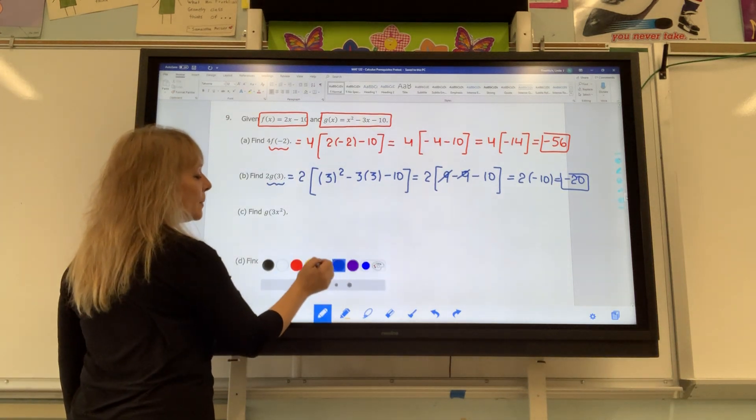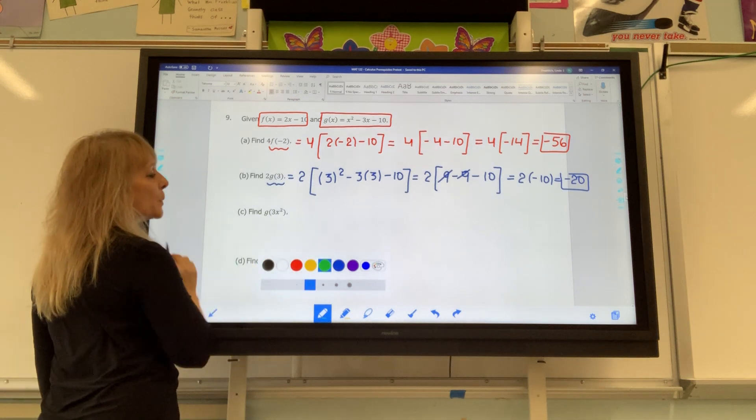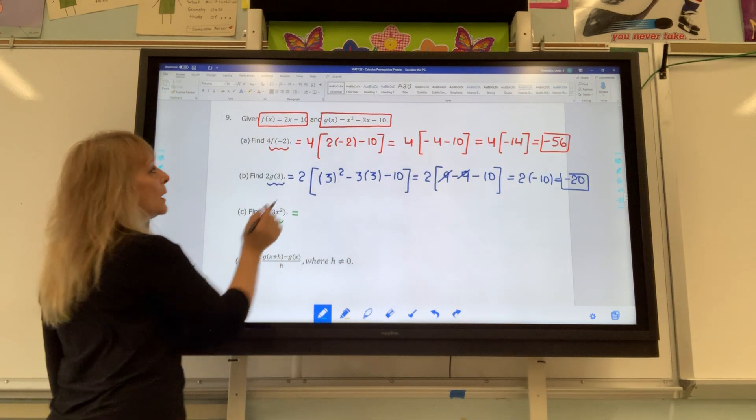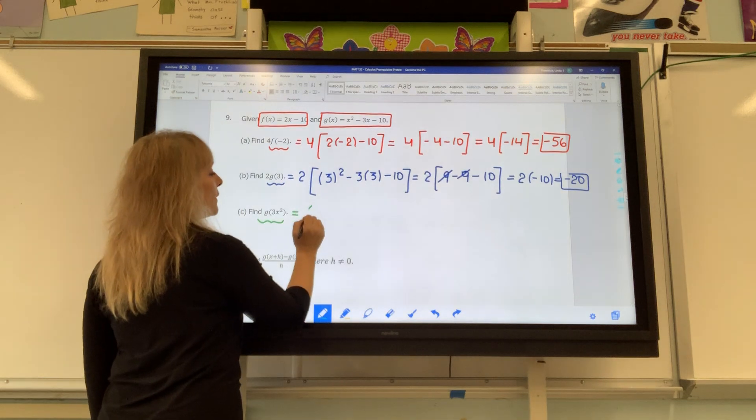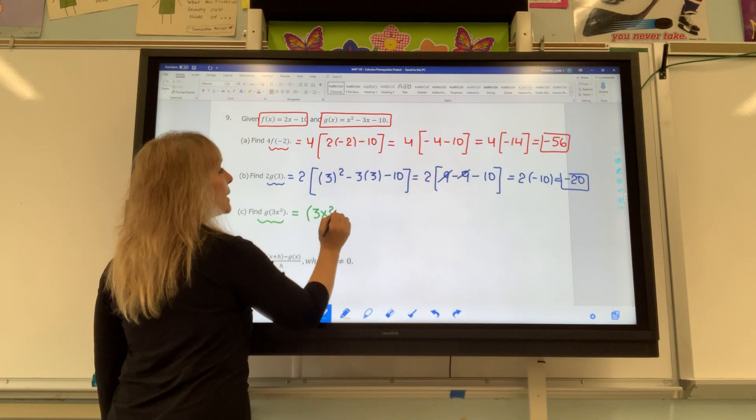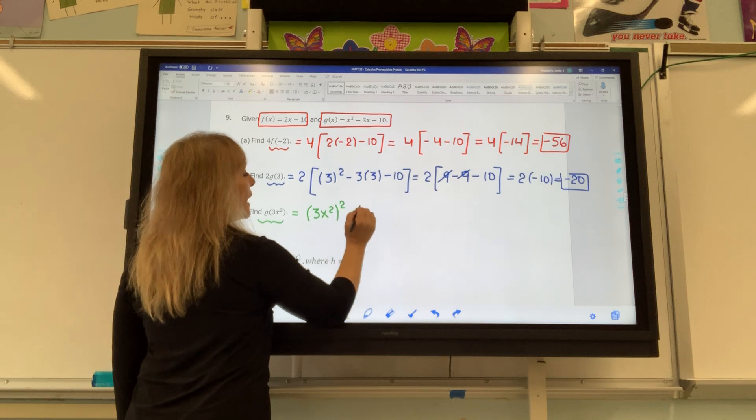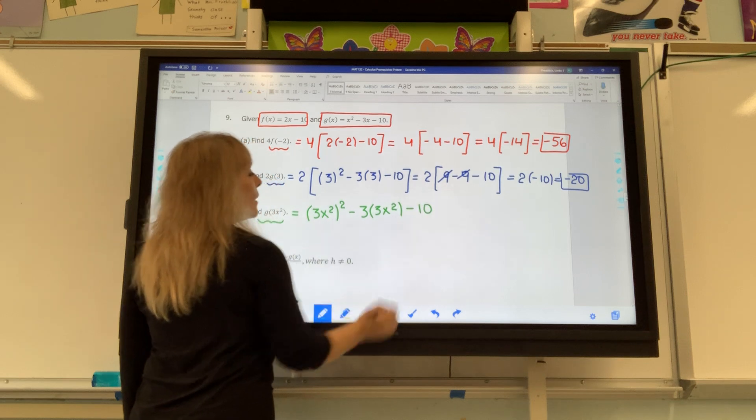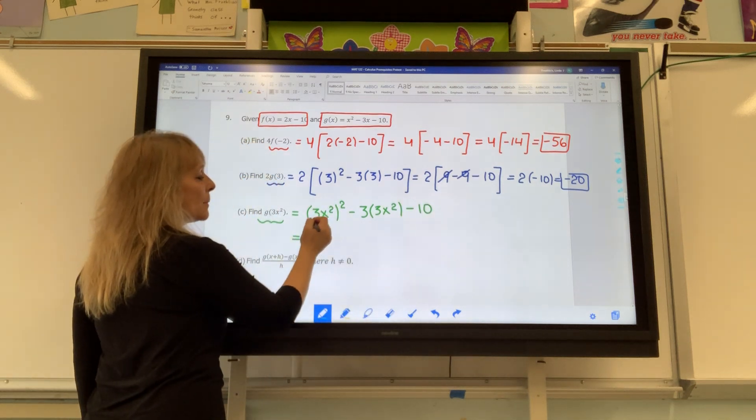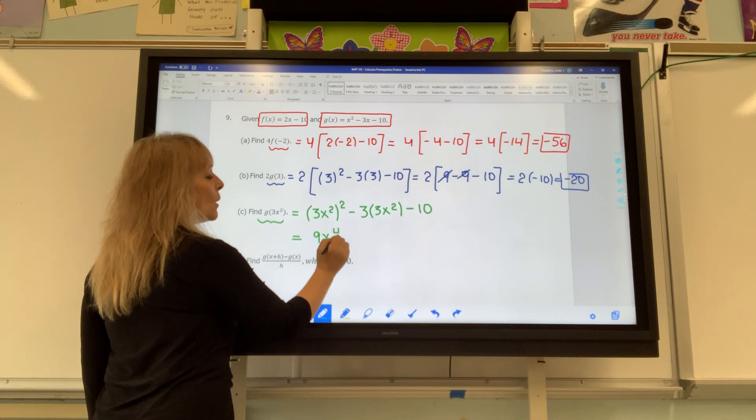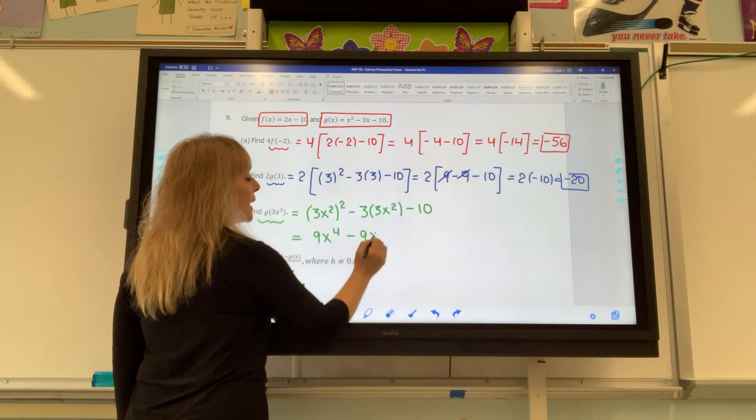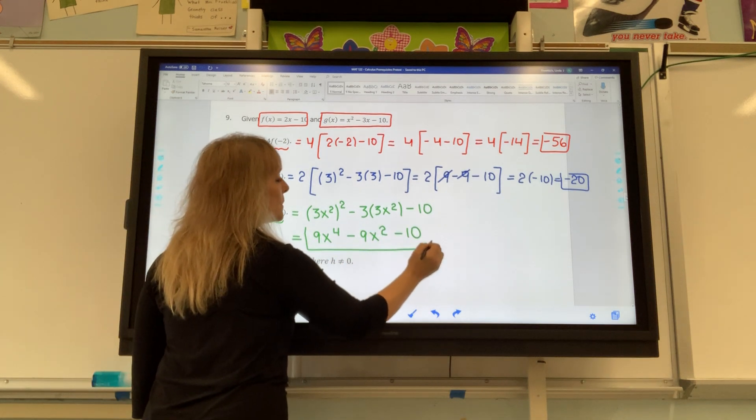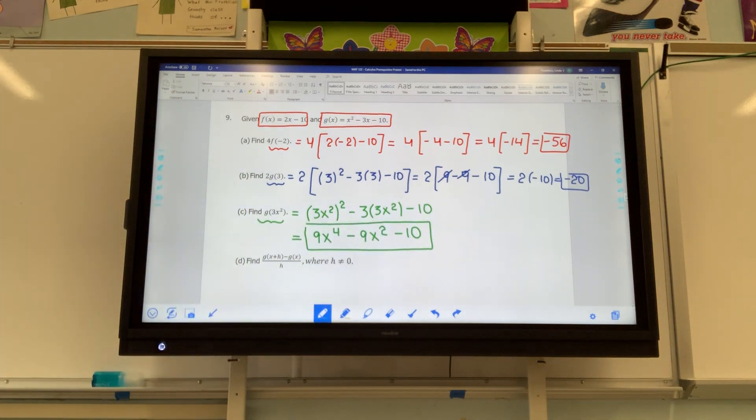Changing the problem a little bit because it's not a value you're putting in, it's an expression. This means fill in 3x squared, that monomial, into all the x's on the right-hand side of g. So 3x squared is going to be substituted in for it. When you square, it becomes 9x to the 4th. When you multiply, it becomes 9x to the 2nd, and then minus 10. Because they are not like terms, this is the answer for letter c.